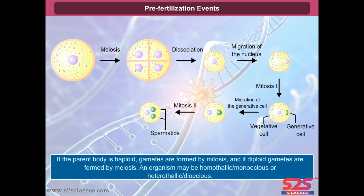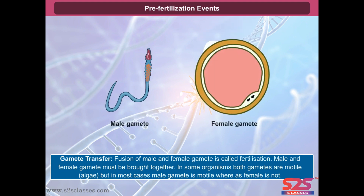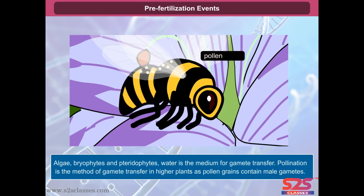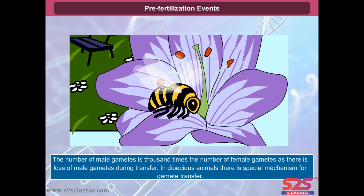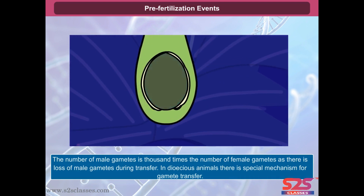An organism may be homothalic or monoecious or heterothalic or dioecious. Gamete transfer: Fusion of male and female gamete is called fertilization. Male and female gametes must be brought together. In some organisms both gametes are motile, as in algae, but in most cases the male gamete is motile whereas the female is not. Algae, bryophytes and pteridophytes use water as the medium for gamete transfer. Pollination is the method of gamete transfer in higher plants as pollen grains contain male gametes. The number of male gametes is thousands of times the number of female gametes, as there is loss of male gametes during transfer. In dioecious animals, there is a special mechanism for gamete transfer.